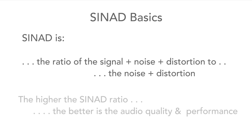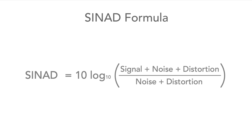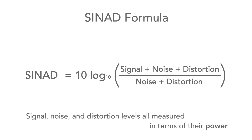This means that the higher the SYNAD level, the better the quality of the audio signal. In terms of the formula, SYNAD is expressed in decibels and equals 10 times log base 10 of the level of the combined signal, noise, and distortion divided by the noise and distortion. It's worth noting that the signal levels are all measured as power and not as voltages.